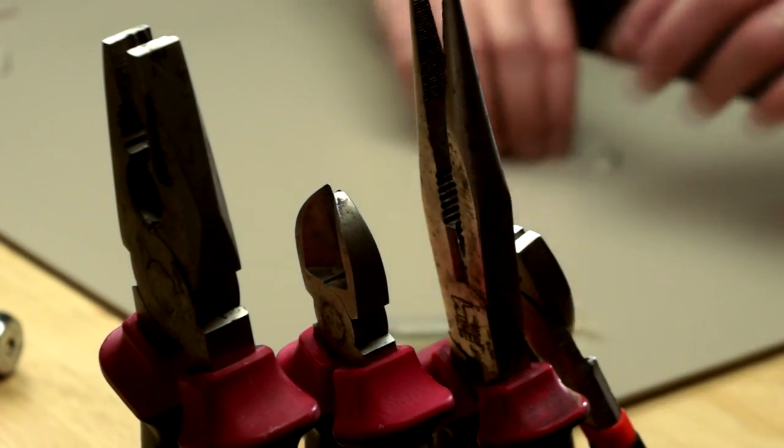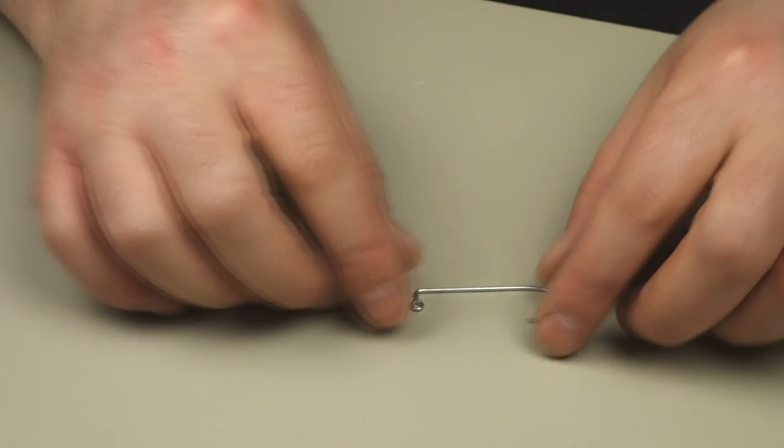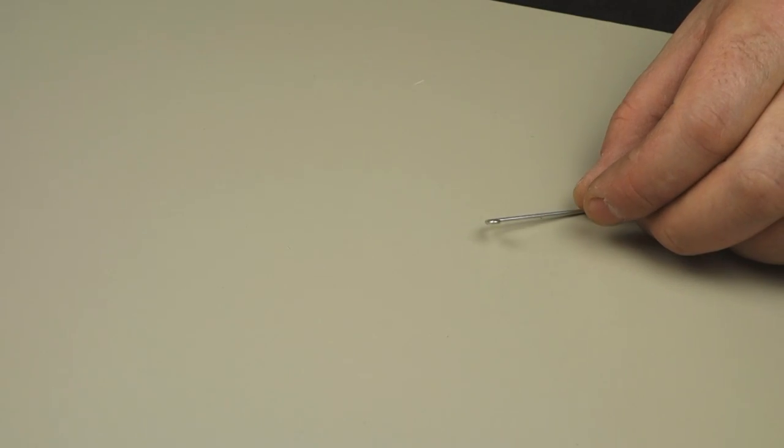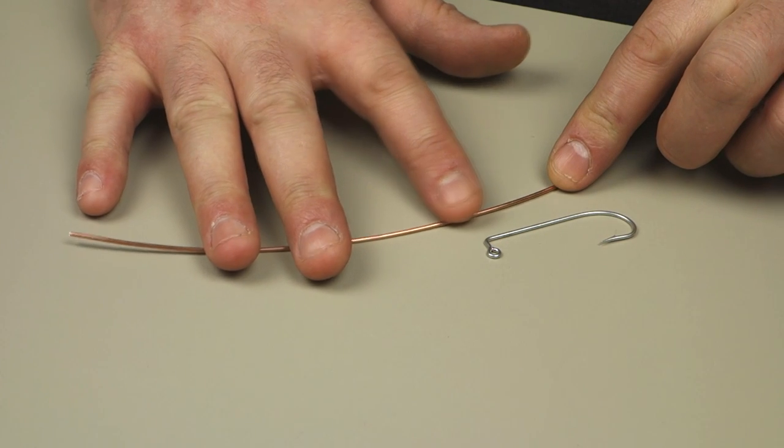To make the setup I'm starting with a jig hook, this is a 3/0, and for weight I'm using a piece of copper that has been stripped from a piece of cable.